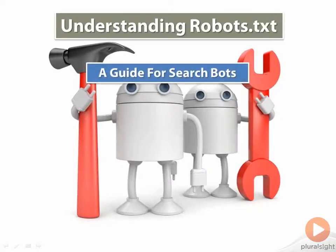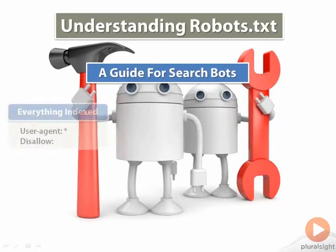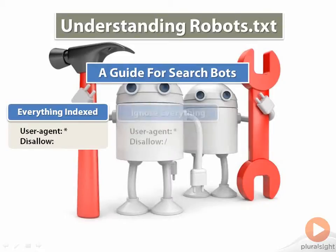I've created a quick and dirty guide on several commands you can use for your own robots.txt file. The first and easiest option is to allow everything to be searched. By having an asterisk in the user-agent field, we are in essence saying that this rule applies to any bot coming to the site. By leaving disallow blank, we are telling the bots that there isn't anything we want them to consider. This is actually an unnecessary command, since if you decide not to have a robots.txt file, the search engines will naturally just assume this.